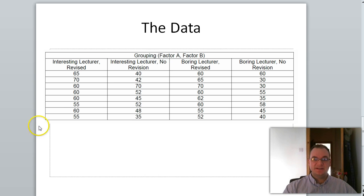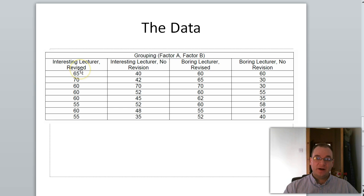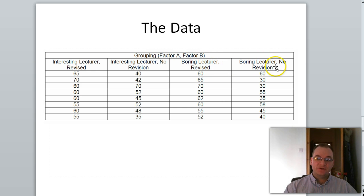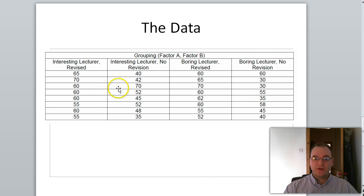Here is some concrete example data — artificial, but representative of what this study might produce. We have participants in each condition: some exposed to an interesting lecture and asked to revise; a separate group exposed to an interesting lecturer but with no revision; then boring lecturer with lots of revision; and boring lecturer with no revision. Each row represents a participant, and our dependent variable is the percentage score on the final exam.